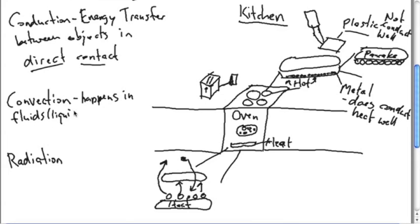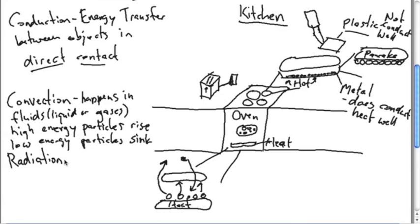So this process is convection. Convection happens in fluids, and by fluids we mean liquids or gases, where high energy particles rise, low energy particles sink. So in the oven, these are the high energy particles and they rise, and then the low energy particles sink back down. Now that's happening in your oven, but it also happens in the kitchen in general. If you measure the temperature at the floor, you're going to find out that it's much colder than the temperature up by the ceiling.